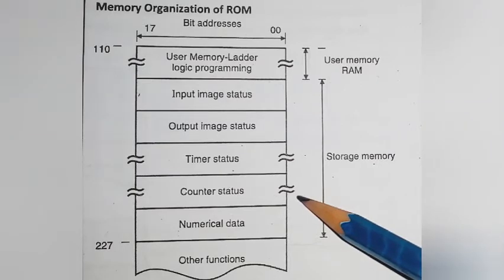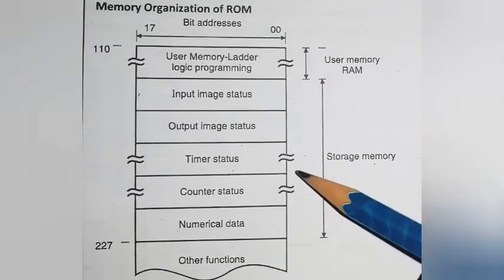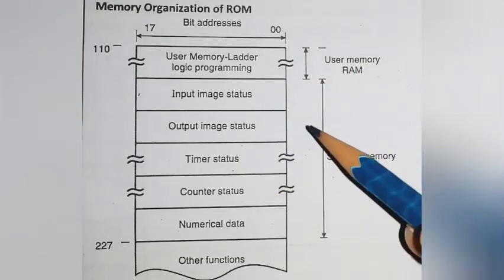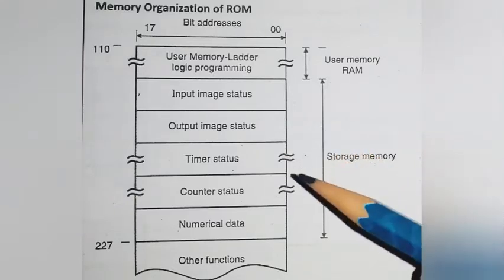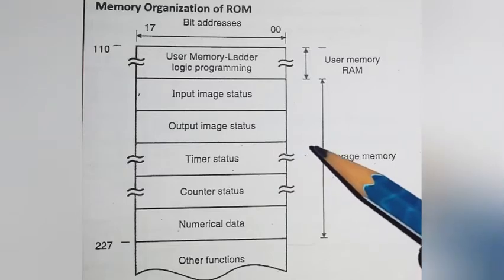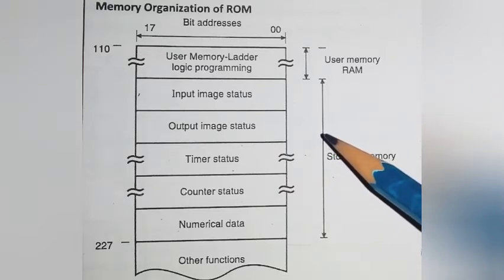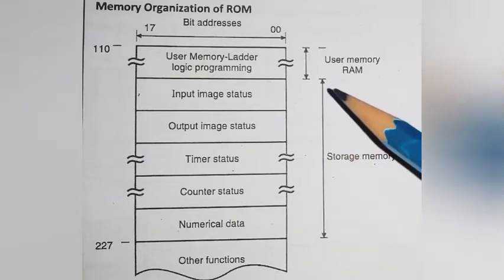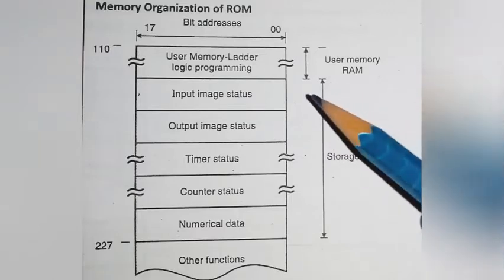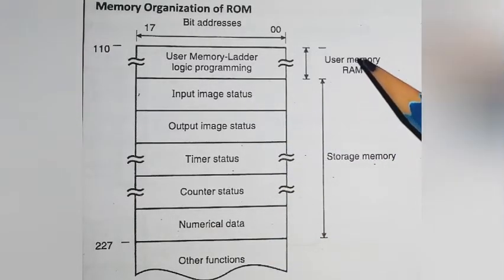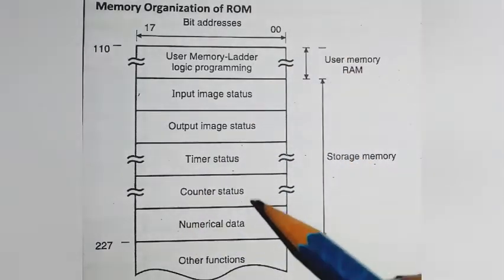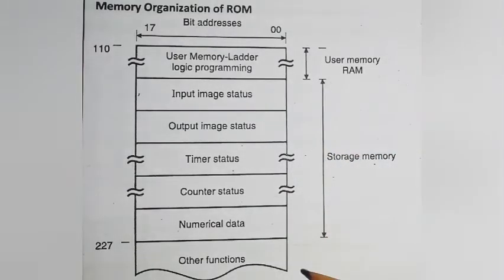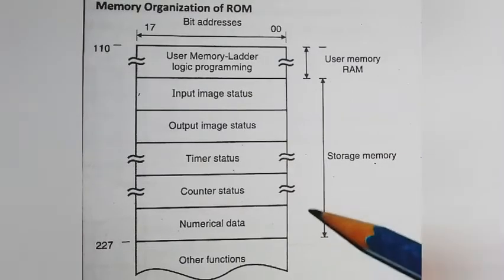The function and organization of ROM: the first function is storage of the program. The second function is that ROM holds the main program and other programs necessary for the operation of the PLC. The organization of data and information in memory is called the memory map.